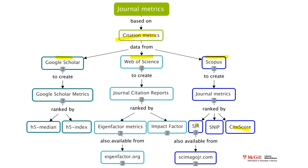In Web of Science, journals are categorized mainly on the basis of Impact Factor. CiteScore by Scopus and Impact Factor by Web of Science are almost the same, except for the duration considered. Scopus considers the previous four years of data for CiteScore calculation, whereas Web of Science considers the previous two years for Impact Factor. These are the different journal metrics based on citations.